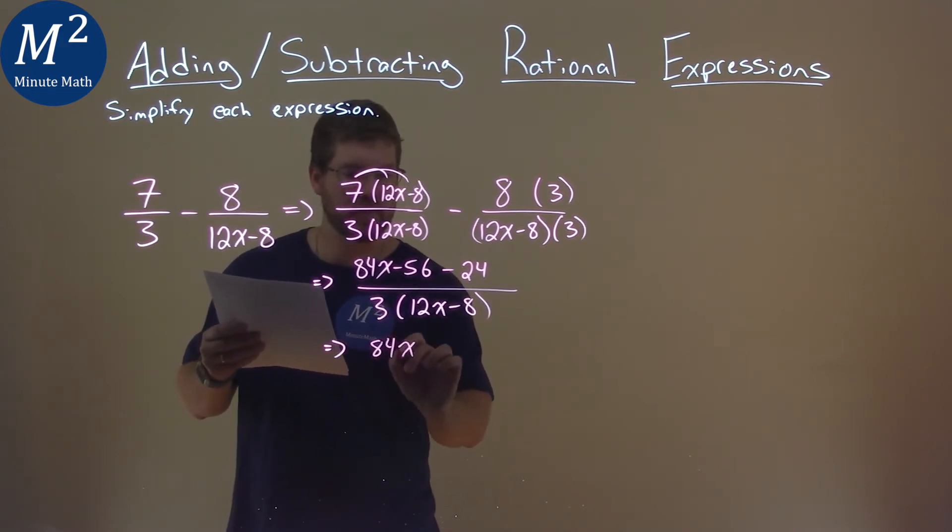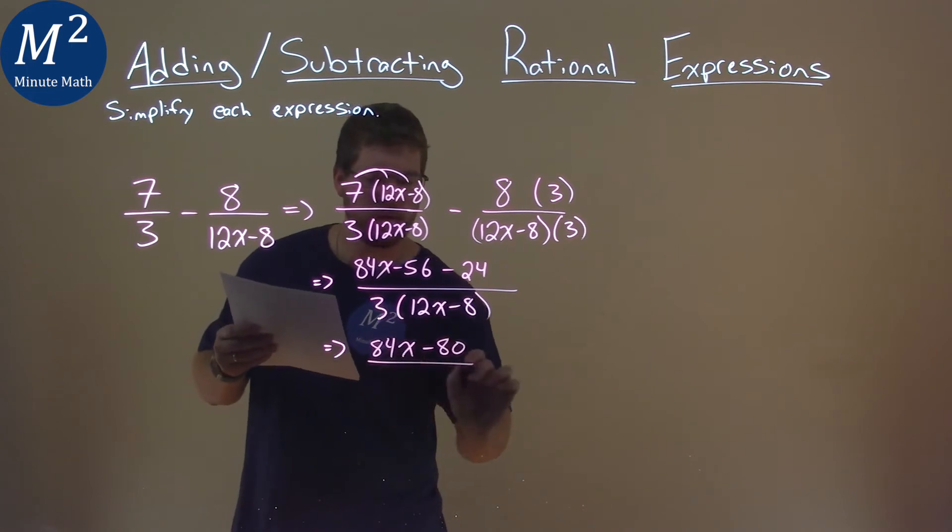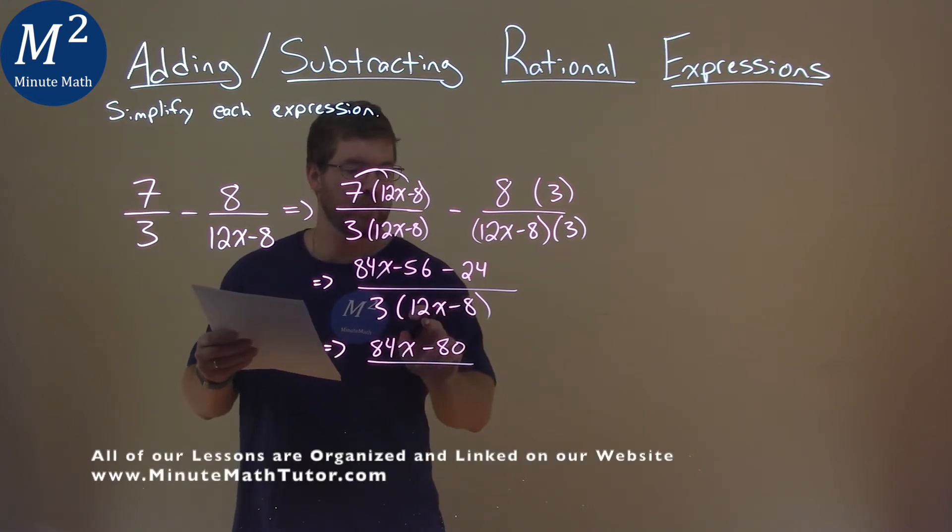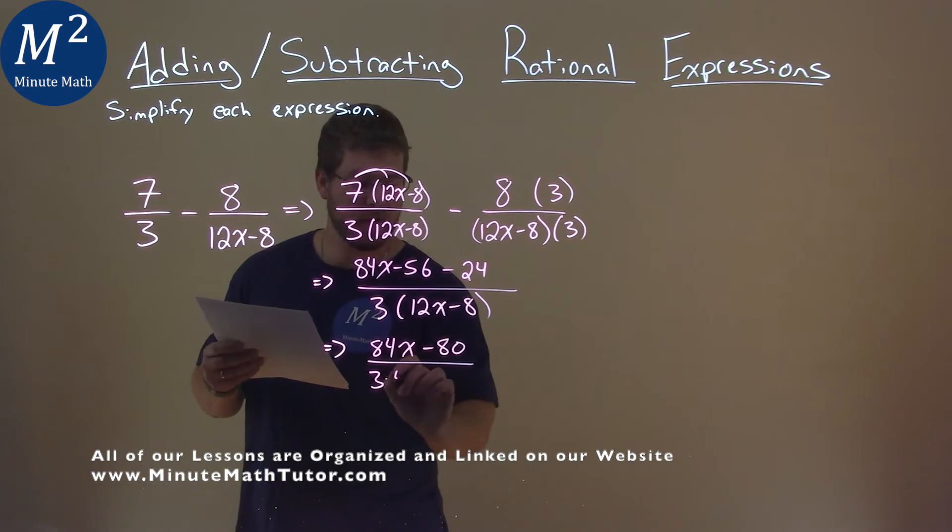So we have 84x - 80 over, down here in the denominator I can pull out a 4. So if I pull out a 4 from both parts, 3 times 4, I'm left with 3x - 2.